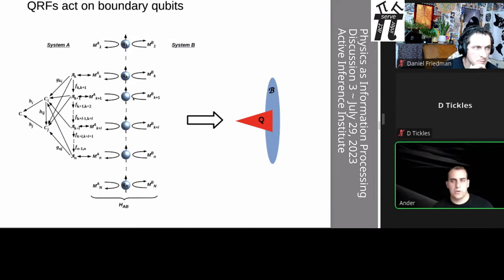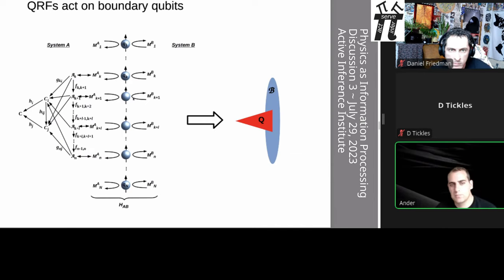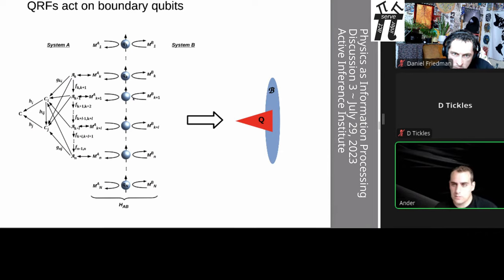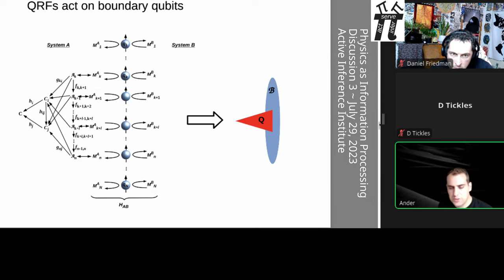Even if it's topological, we're going to have real degrees of freedom that the QRF attaches to in this cone-cospan diagram. We're going to have measurement operators that yield classical outcomes — plus and minus one. You can think of this QRF, or more abstractly this cone-cospan diagram, as a neural network acting on those boundary qubits and then back-propagating some sort of action or preparation signal.